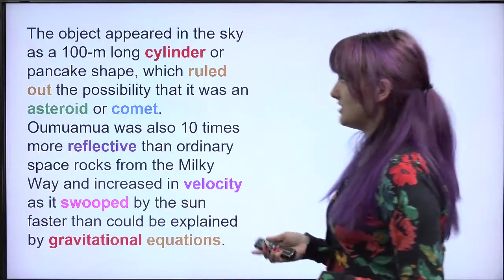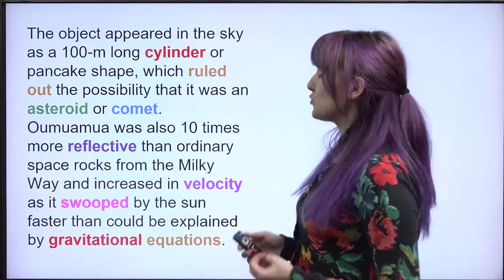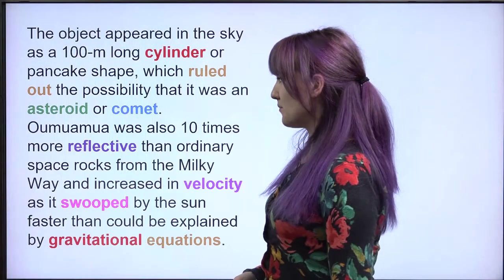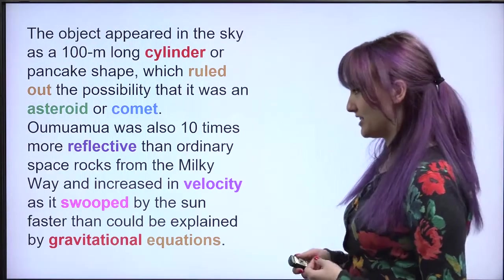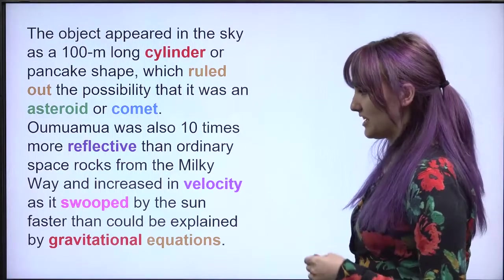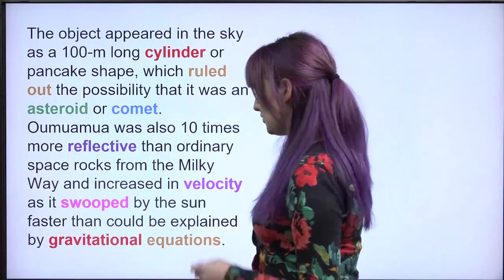The object appeared in the sky as a 100 meter long cylinder, or a pancake shape, which ruled out the possibility that it was an asteroid or a comet. Oumuamua was also 10 times more reflective than ordinary space rocks from the Milky Way, and increased in velocity as it swooped by the sun faster than could be explained by gravitational equations.